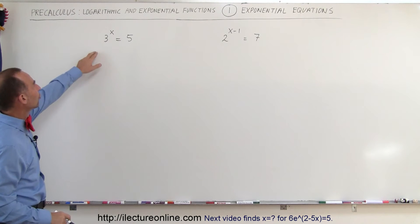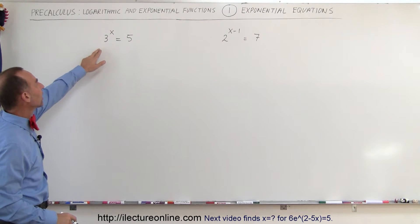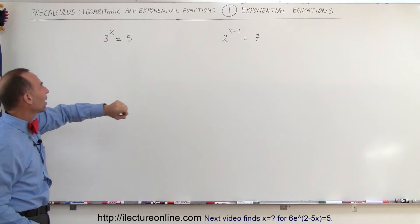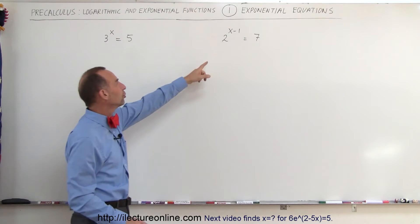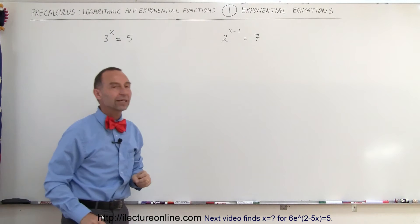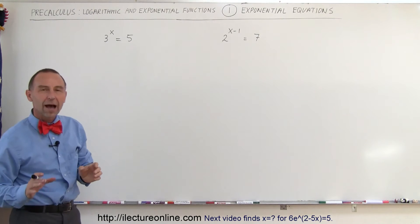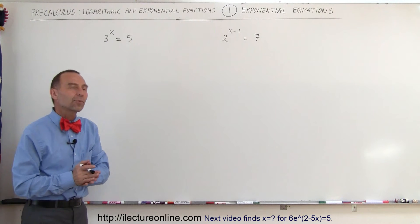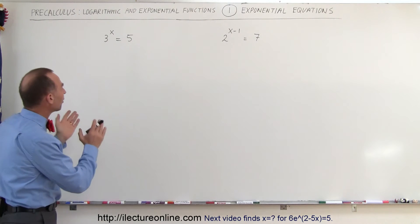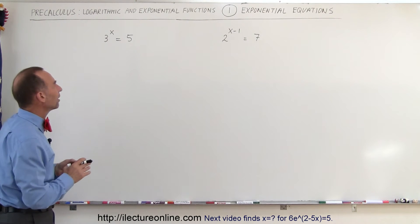So let's say we have 3 to the x power equals 5, or we have 2 to the x minus 1 equals 7. How do we solve something like that? How do we solve for x in each case?